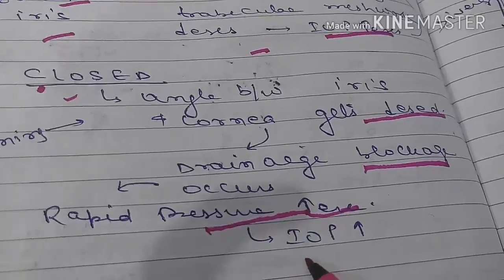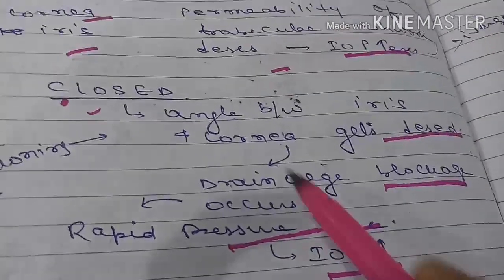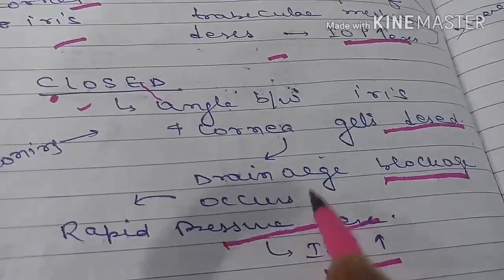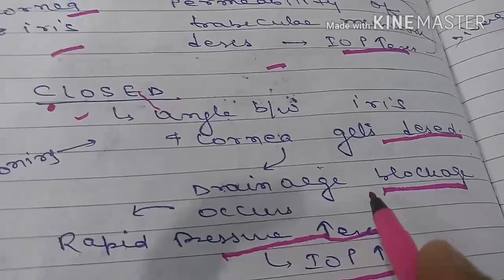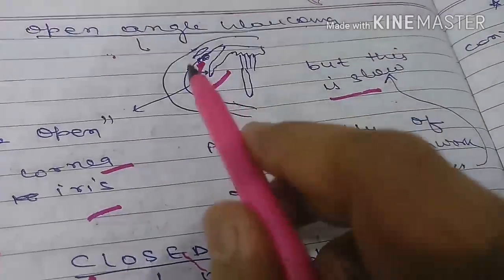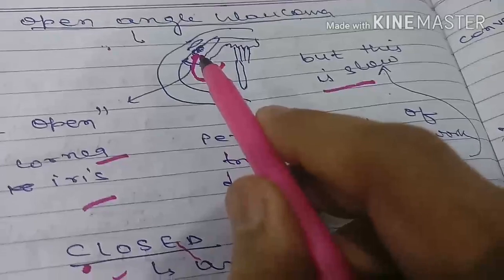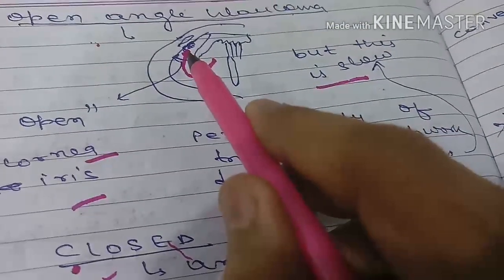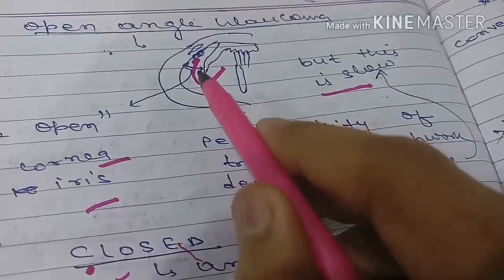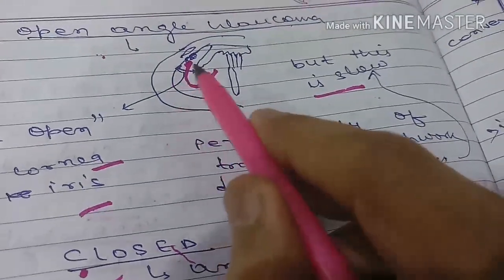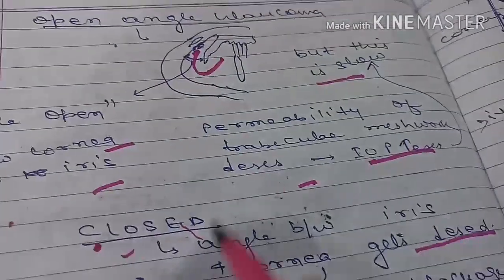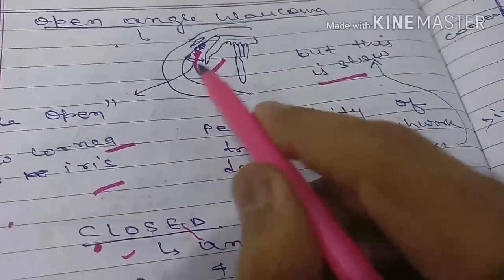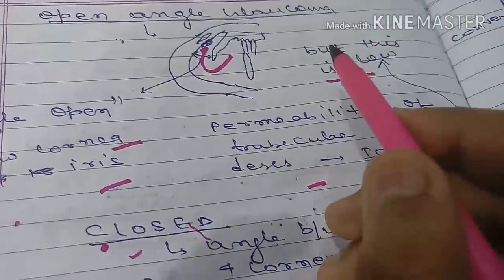In closed angle glaucoma, there is rapid increase of pressure and the drainage system is blocked. In open angle glaucoma, the angle is open but the drainage system works at a slow speed, causing pressure to increase gradually.